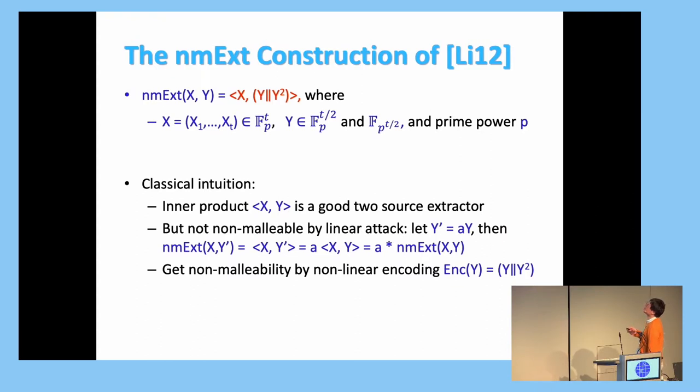So let's talk about the non-malleable extractor of Li. So the extractor has a really simple form, just look at this. So X is a vector of T elements over F_p, Y is a vector of T over 2 elements over F_p. And unless you are doing square, then it's over F_p to T over 2. So the double line here is concatenation. So Y and Y squared concatenation together, that's also in F_p to T, so those are nice. And the bracket outside is inner product, so the output is an element in F_p.